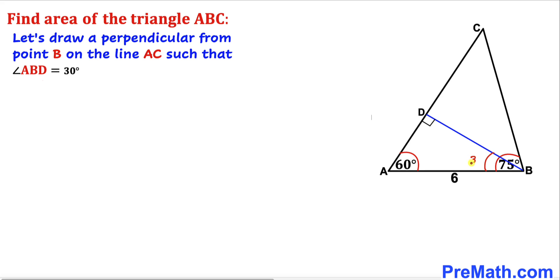This angle ABD is going to be 30 degrees because the sum of all three angles — 60 degrees, 30 degrees, plus 90 degrees — is going to be 180 degrees. And since the whole angle B is 75 degrees and this part is 30 degrees, this remaining angle has got to be 45 degrees.